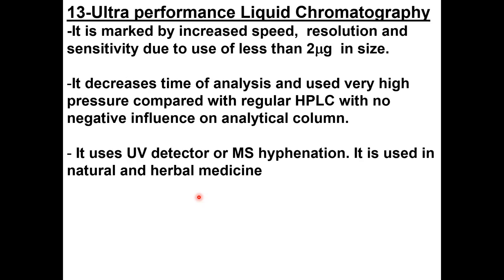Ultra-performance liquid chromatography, or UPLC, is a type of liquid chromatography marked by speed, resolution, and sensitivity. It uses particles of less than two micrometers in size, which decreases analysis time. It uses very high pressure compared to conventional HPLC, with no negative influence on the analytical column. It uses a UV detector or MS detector and can be used in the analysis of natural and herbal medicines.